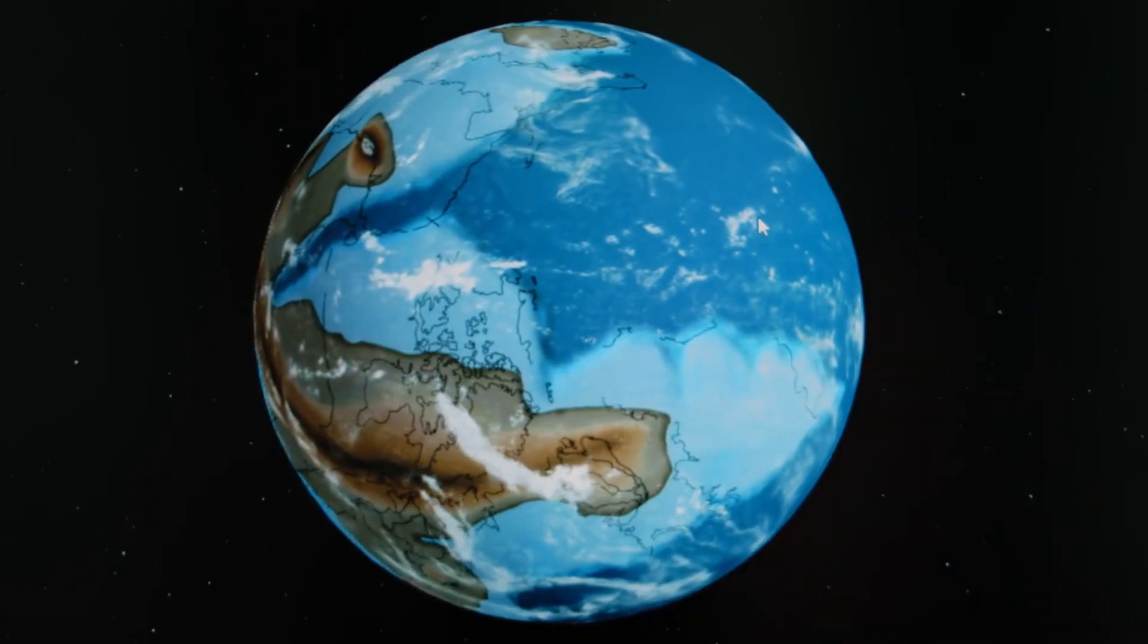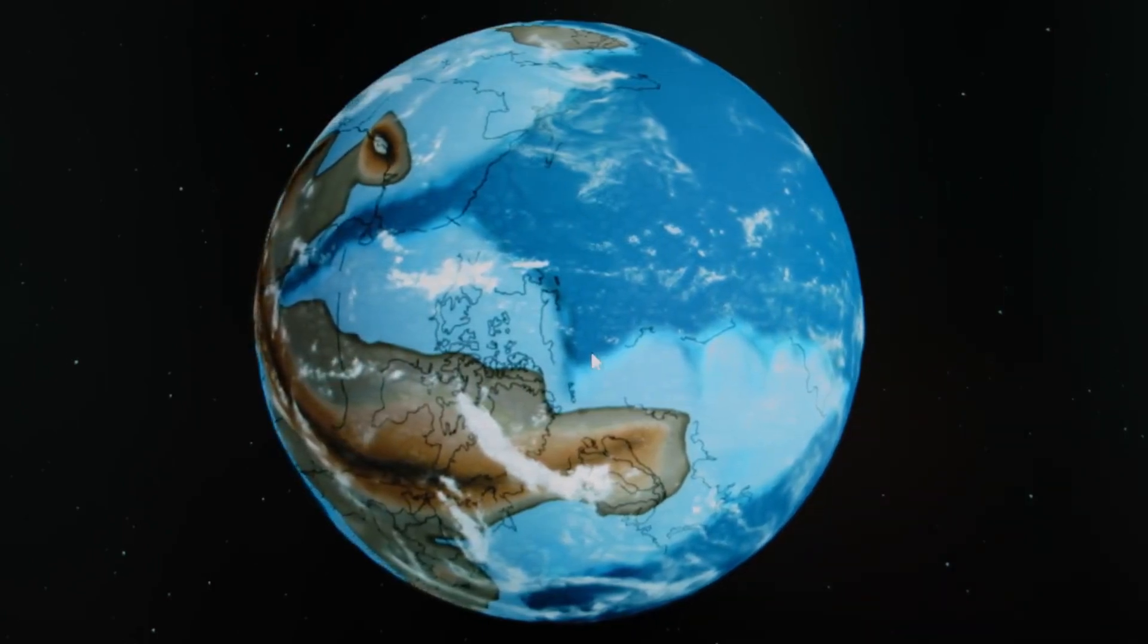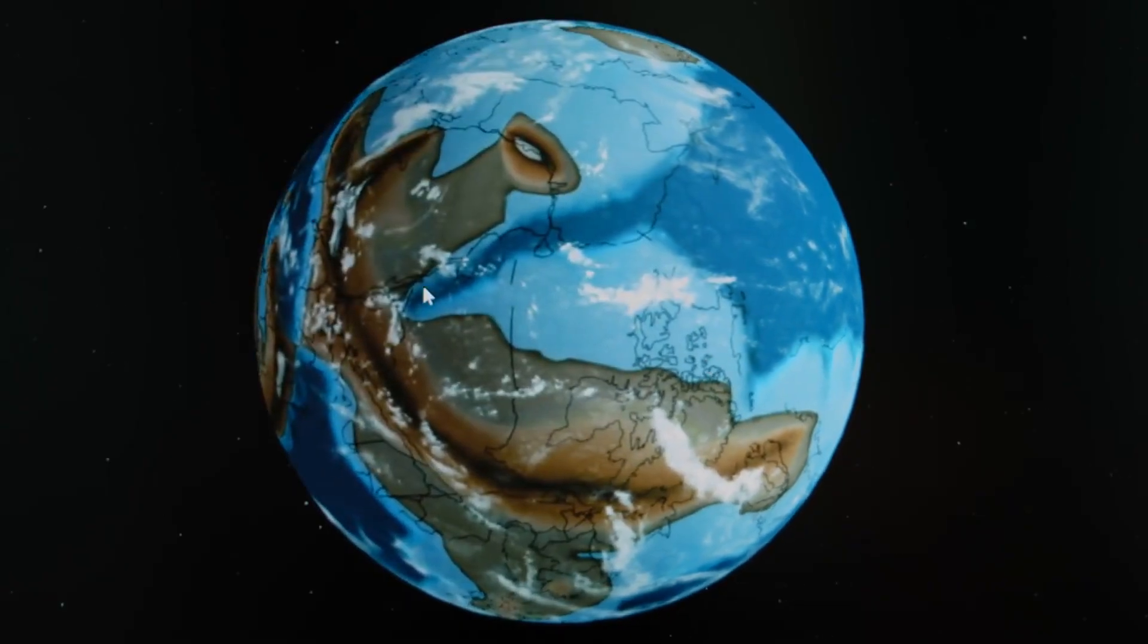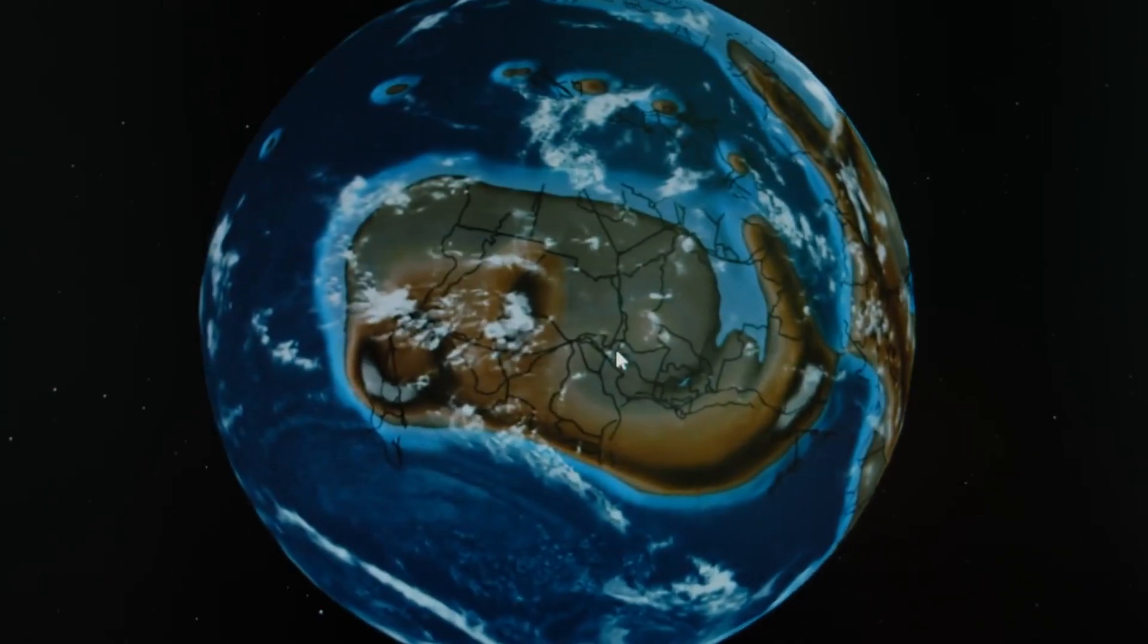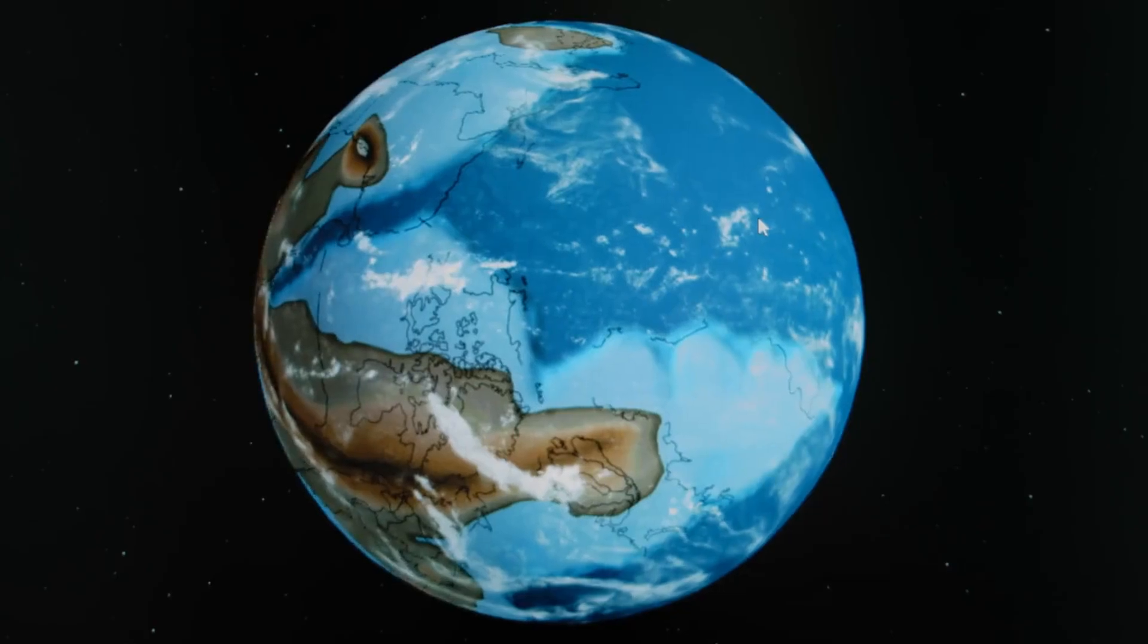The Cryogenian period, spanning from approximately 720 to 635 million years ago, represents one of the most extreme climatic episodes in Earth's history.